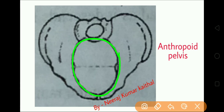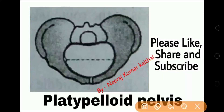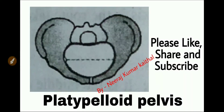The last, fourth type of pelvis is platypelloid pelvis. Five percent of women have this type of pelvis. The brim or inlet is kidney shaped. The transverse diameter is more than the anterior-posterior diameter. Obstetric outcomes are generally good. As you can see in the diagram, the platypelloid pelvis has a pelvic brim like a kidney shape.